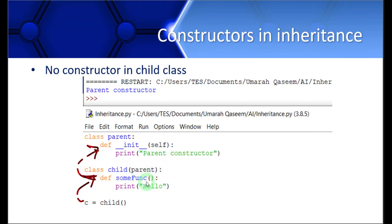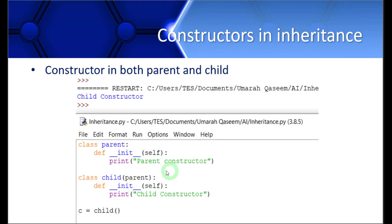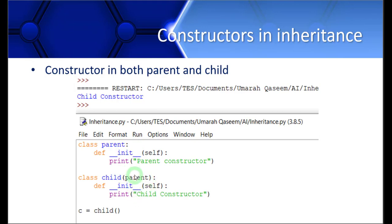Now let's see what happens if we add a constructor to the child class. This is the same code — the parent class and child class — but now I've added constructors in both. The parent class has 'parent constructor' and the child class has 'child constructor'. I create one object of the child class, and the output shows only 'child constructor'. The parent constructor has not been executed. Whenever we create a constructor in the child class, the parent constructor is overridden and only the child class constructor is called.